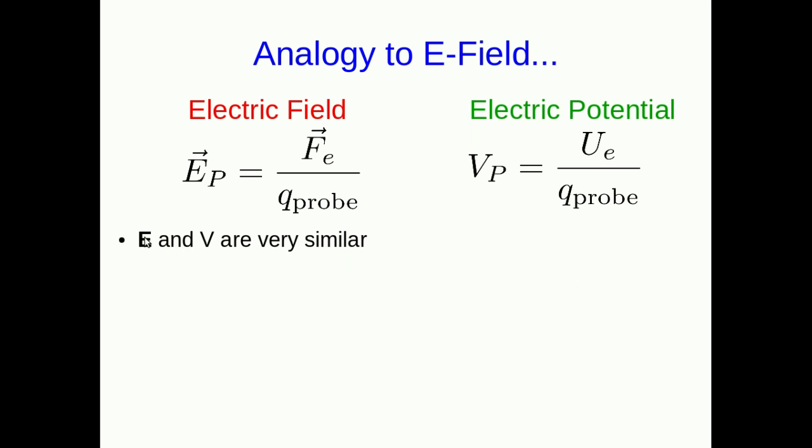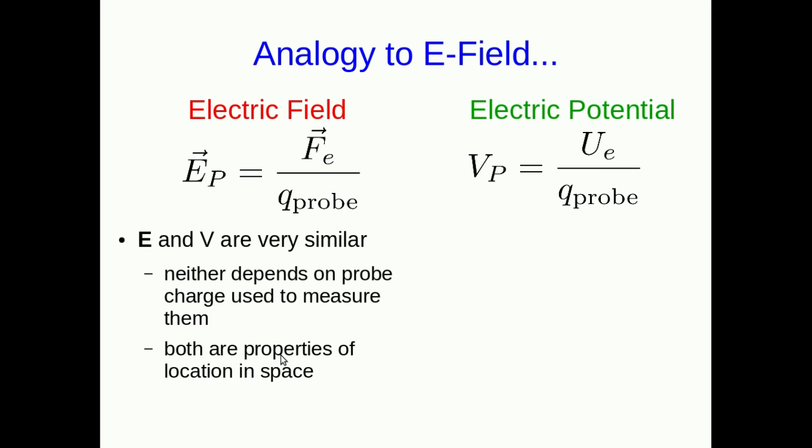So the electric field and the electric potential are very similar. Neither one depends on the probe charge used to measure them, although the formulas might make you think that they should. Both are just properties of the location in space that you're looking at, and they tell you something about how charges move when they are at that location in space.